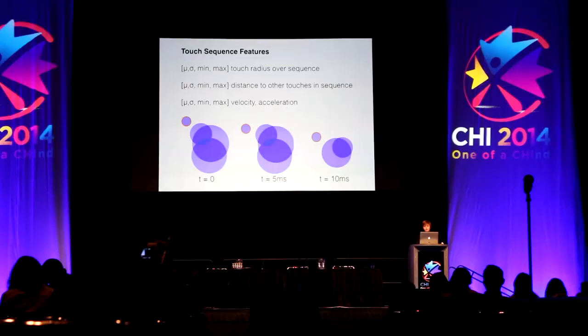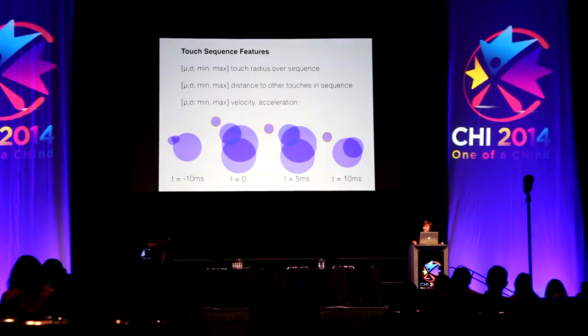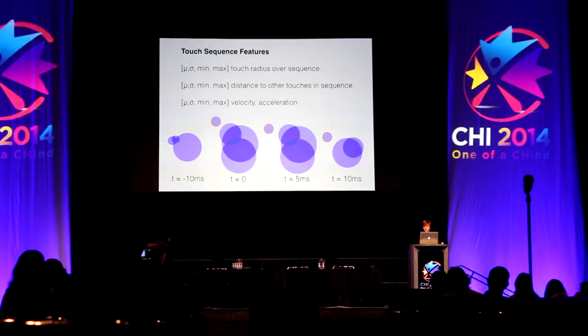In particular, if you look at a sequence of touch frames, you can compute statistics over how the radius evolves over time and how the distance to other touches also changes. You can also get things like velocity and acceleration. One interesting thing we found is that you can do even better by looking at touches slightly before the touch occurred. The reason is because of these flickering palm touches — when your initial touch-down occurs, you might not have any palms on the screen yet, so you may need to look back a bit to get more information.